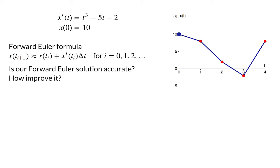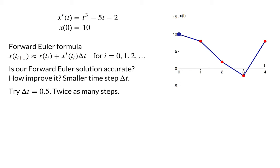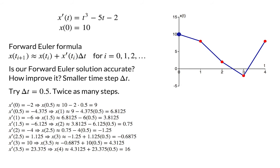We could increase the accuracy by taking smaller time steps delta t, so that we recalculate the slope of the function more frequently. For example, we could cut the time interval in half to delta t equals one half. This sounds like a good idea, but the cost is that we have to take twice as many steps. To get to t equals 4, we have to take eight steps of the algorithm.